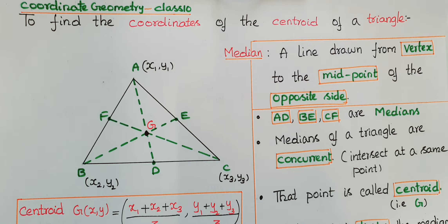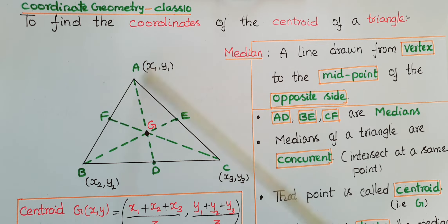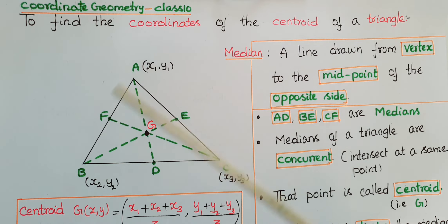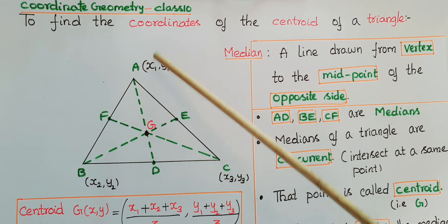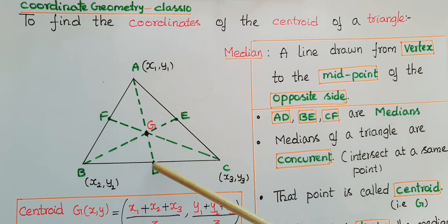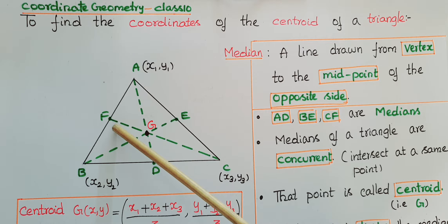Hello everyone, today I am going to show how to find the coordinates of the centroid of a triangle. See this figure ABC — here D, E, F are midpoints of the three sides of this triangle. A median means a line drawn from the vertex to the midpoint of the opposite side, so here AD, BE, CF are medians.